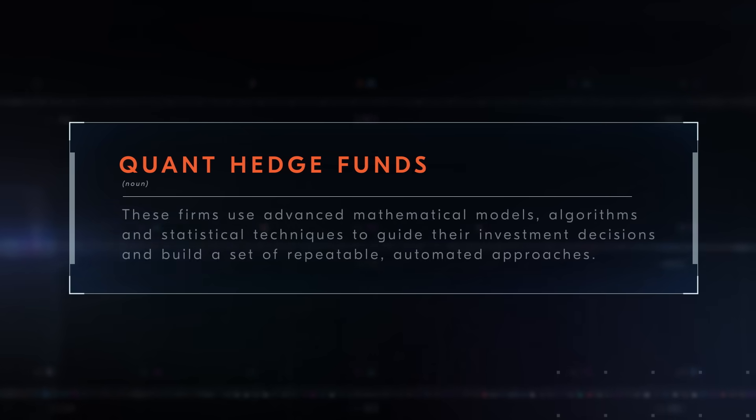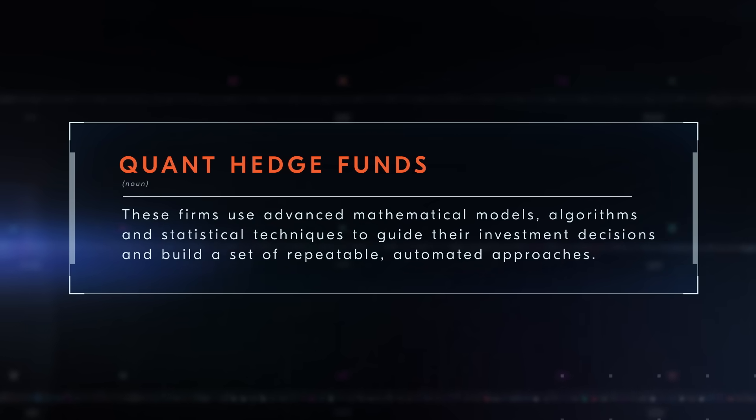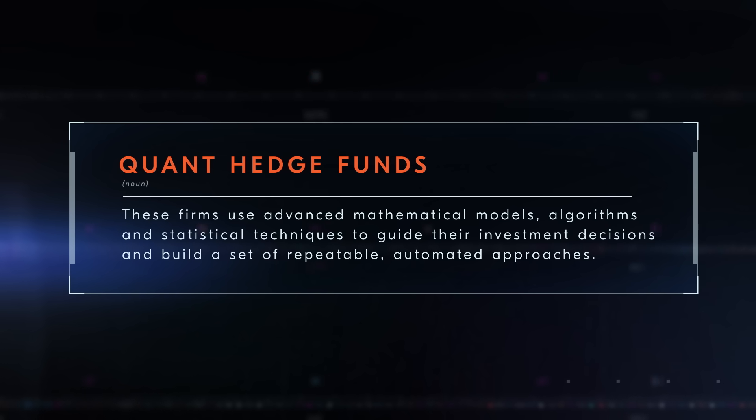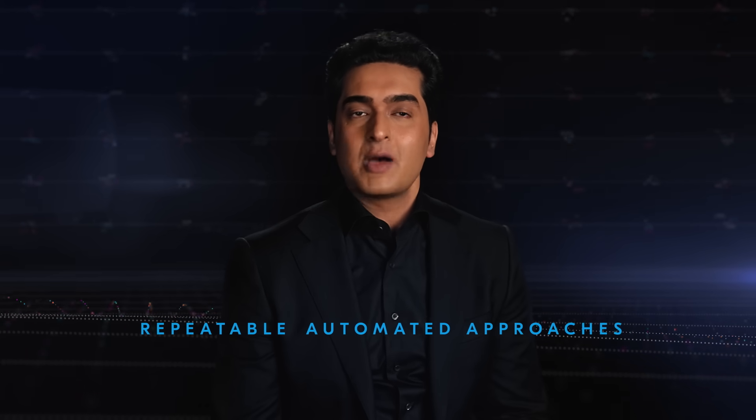In shorting, an investor borrows shares and sells them, hoping to buy them back later at a lower price to make a profit. Amongst hedge funds, there is a specific type known as quant hedge funds. These firms use advanced mathematical models, algorithms and statistical techniques to guide their investment decisions and build a set of repeatable automated approaches.